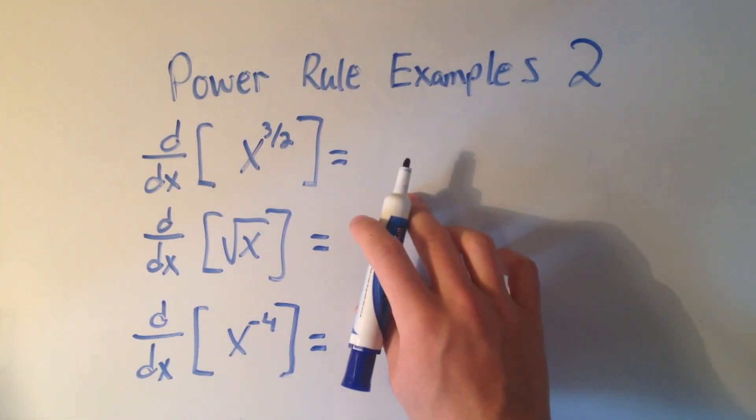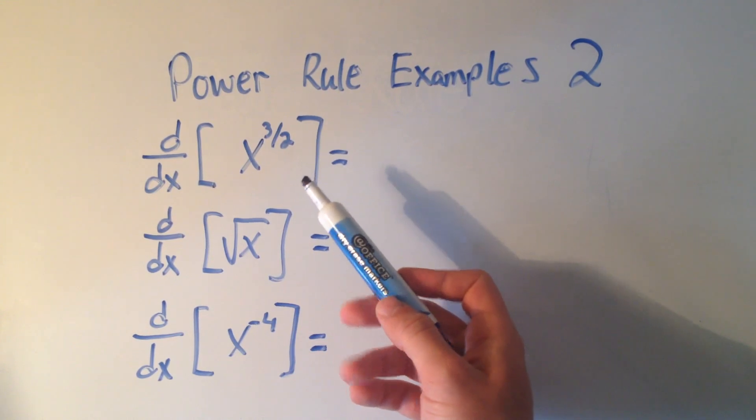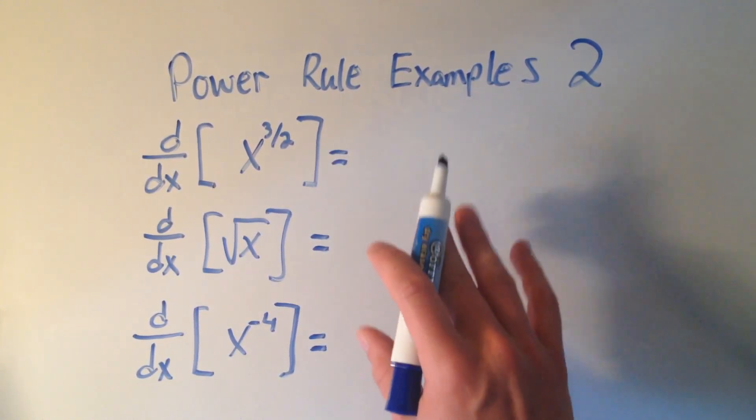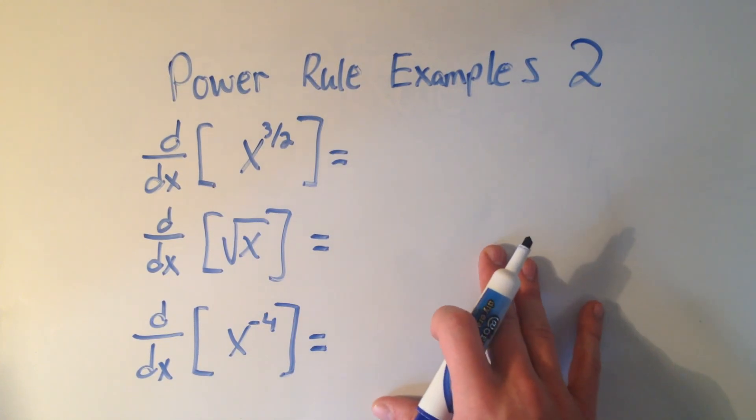Often the most tricky problems you're going to have with the power rule is when you have fractional exponents or negative exponents, but the rule still works exactly the same.